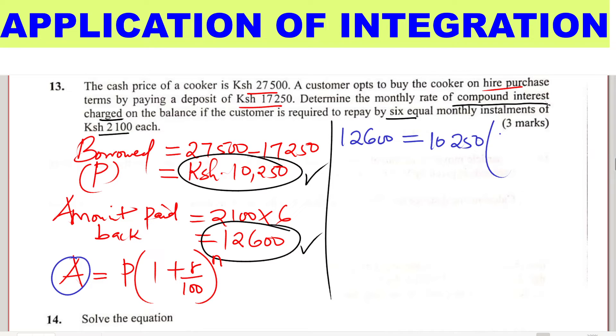Then 1 plus R, where we are finding the rate R. N is the period in which the money is paid. It is paid in six equal monthly installments, so the period is 6. Now when we solve this equation for R, that will be the rate.